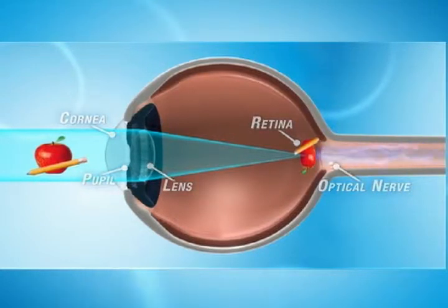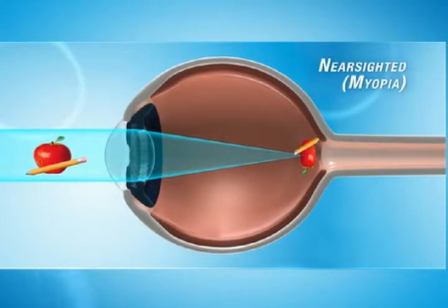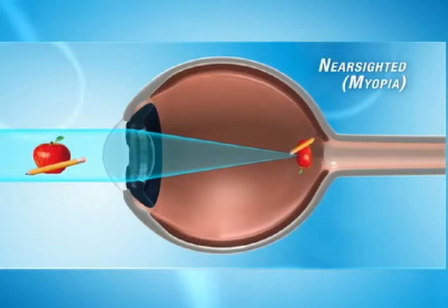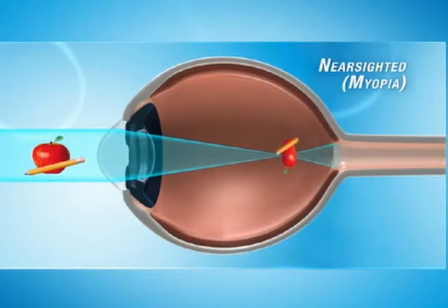For people who are nearsighted or myopic, the cornea is too steeply curved. This causes the light rays to focus in front of the retina, resulting in blurred vision.